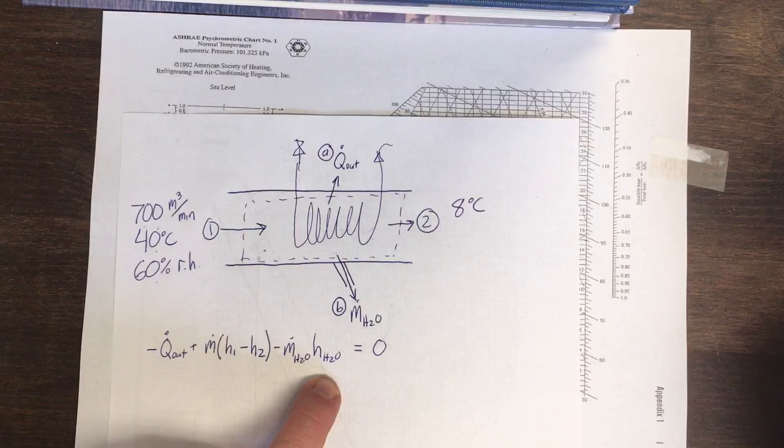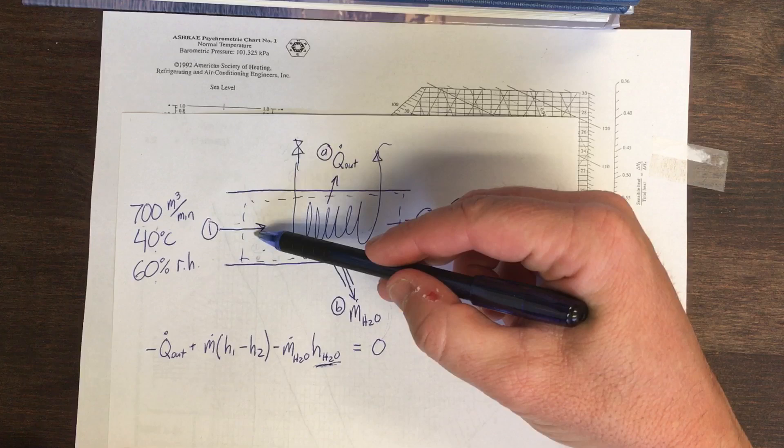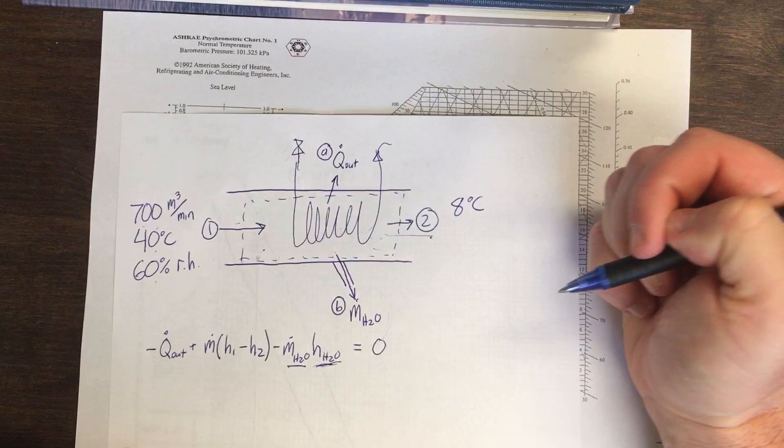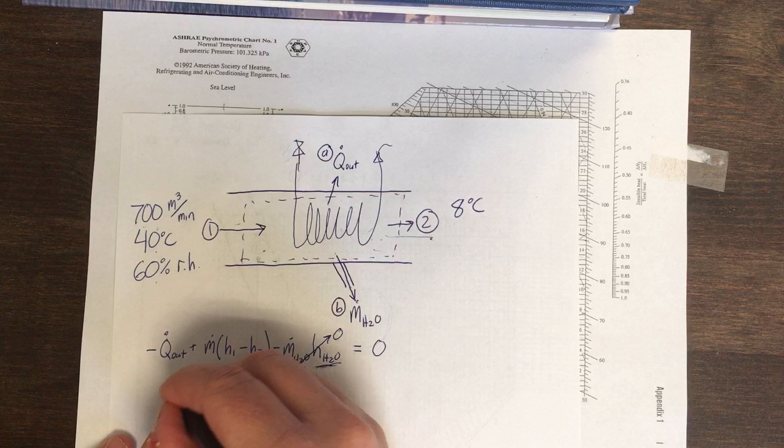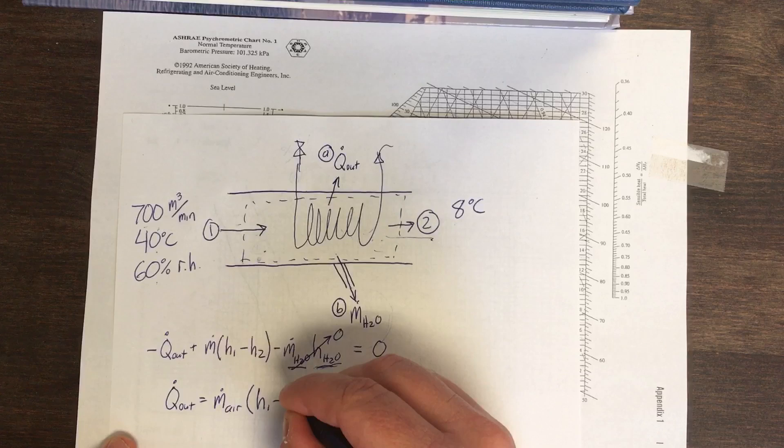We've got mass coming in at 1, bringing with it enthalpy, leaving at 2, taking with it enthalpy, and then we also have liquid water leaving, call that flow rate of water, and then I'll just say the enthalpy of the liquid water that is leaving. Okay, that's our general energy balance. Now, this flow rate of water is very small compared to the flow rate of air. Likewise, the enthalpy of the liquid water that we're removing is also small compared to the enthalpy of the moisture that came in at 1. That was water vapor, and the water vapor that leaves at 2. And so both of these are small numbers, so this is a negligible term. So we can solve for the rate of cooling as the flow rate of air times H1 minus H2.